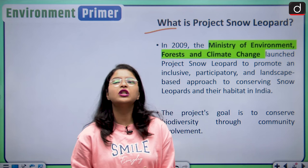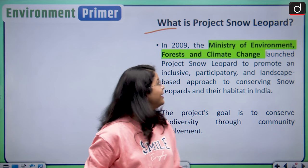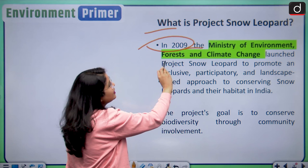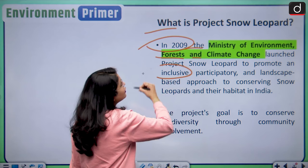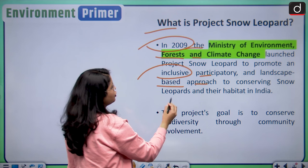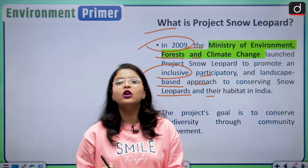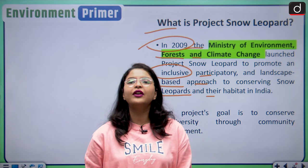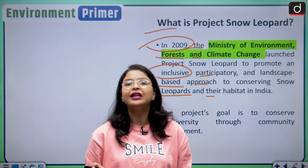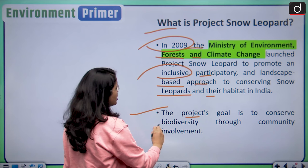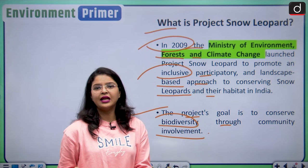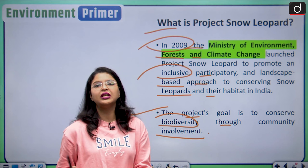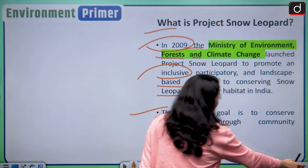Let us analyze what Project Snow Leopard is. This is a very ambitious animal project launched by the Government of India in the year 2009, by the Ministry of Environment, Forest and Climate Change, which is the nodal ministry for implementation of this project. Its aim is to promote an inclusive, participatory, and landscape-based approach to the conservation of snow leopards and their habitat in India. A landscape-based approach is needed because their habitat often lies beyond the protected areas, and we need to involve the local community in the protection. The project's goal is to conserve biodiversity through community involvement, as human-animal conflict is rising due to human interference.